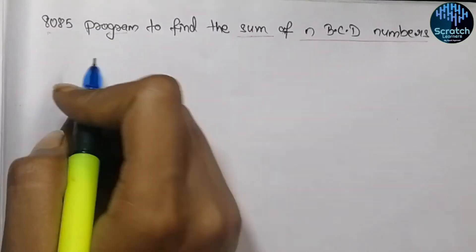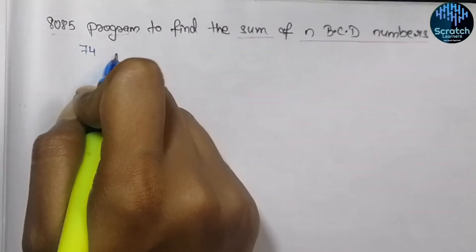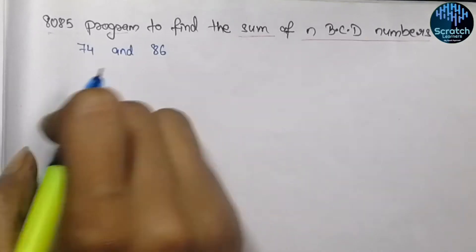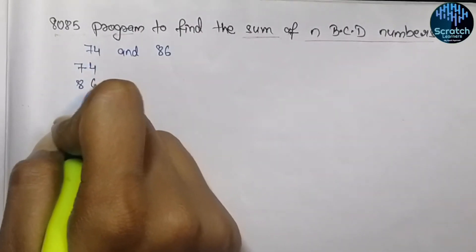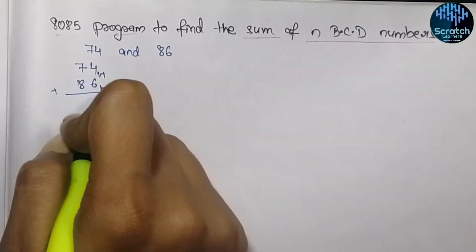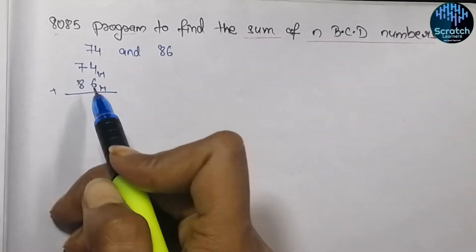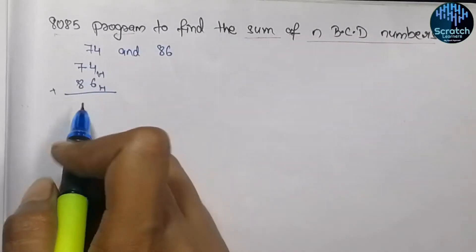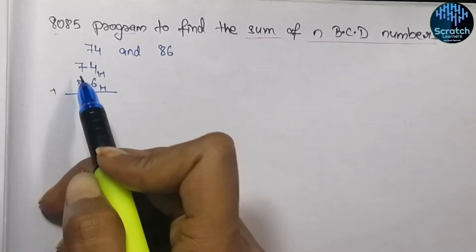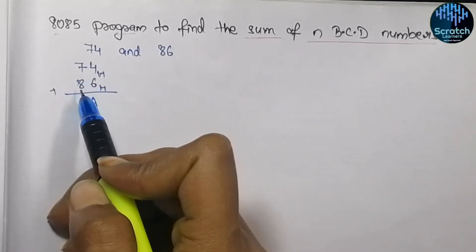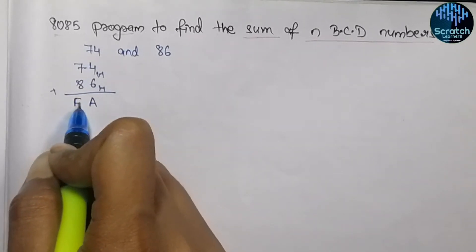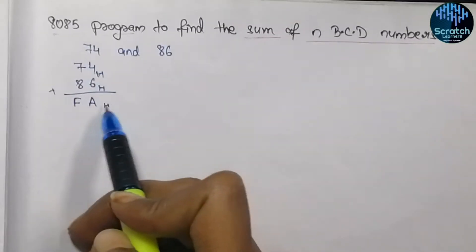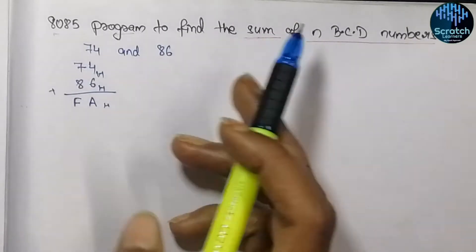In this program we will not be getting the output in hexadecimal, but we will get the output of the sum in decimal format. Let's try to add two numbers: 74 and 86. These numbers are in hexadecimal. If we add them in hexadecimal: 6 plus 4 equals 10 in decimal, but in hexadecimal 10 is equal to A. And 7 plus 8 equals 15, which means we get F. So if we just perform the addition of two numbers in 8085 we get FA as the output.